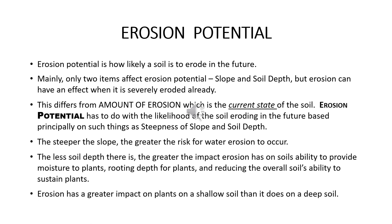Erosion potential. As the name suggests, this is how likely a site is to erode — the potential to erode. This is actually looking into the future of what could happen, whereas the other soil property, amount of erosion, is what has already happened and where we currently are with the current topsoil thickness. There are two factors that affect erosion potential: slope and soil depth, but severely eroded soil can also be a factor as well. The steeper the soil is, the less water will infiltrate into the soil and thus there will be more runoff generated. The greater the runoff there is, the greater potential for erosion.